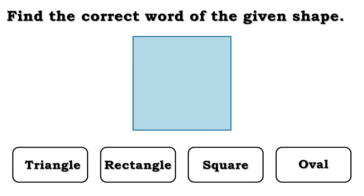Now we have to identify this shape. The words are triangle, rectangle, square, oval. The correct answer is square.